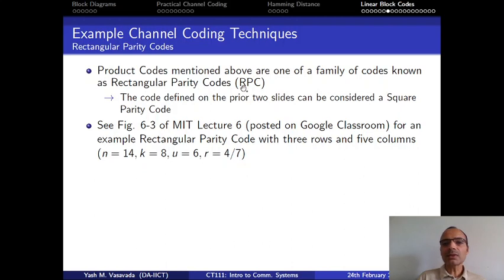And so no wonder there is indeed a scheme like that which is known as rectangular parity coding scheme or RPC. The product code or the square product codes are some specific instances of this more generalized family of RPC codes, and this is actually described in Figure 6-3 of MIT lecture notes number 6. I'll be putting this on our Google Classroom, and this particular example considers k equal to 8, n equal to 14.